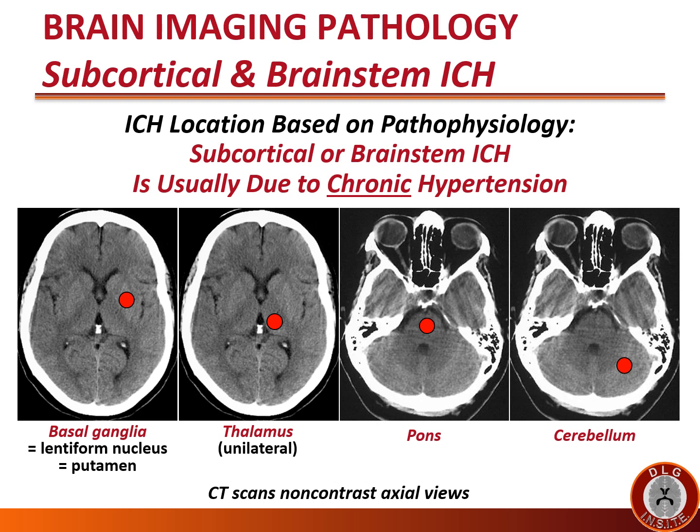Intracerebral hemorrhage (ICH) location varies based on pathophysiology. Subcortical or brainstem ICH is usually due to chronic hypertension. The four main locations for intracerebral hemorrhage due to chronic hypertension are the basal ganglia — specifically the lentiform nucleus or putamen — the thalamus, especially if the hemorrhage is on one side, the pons, and the cerebellum.